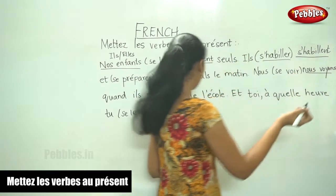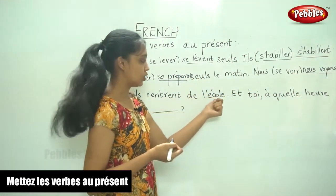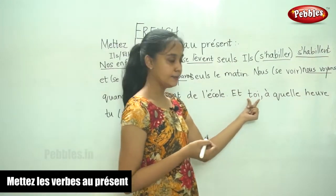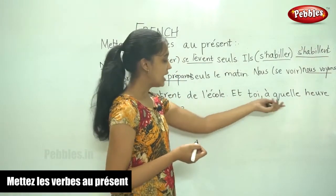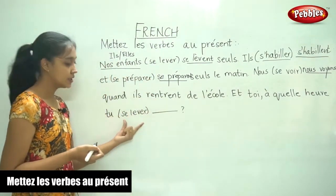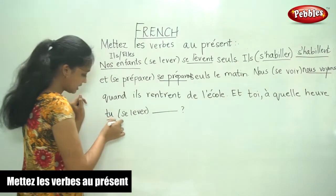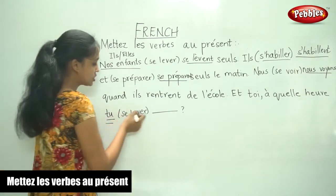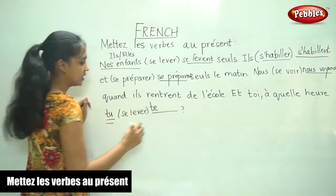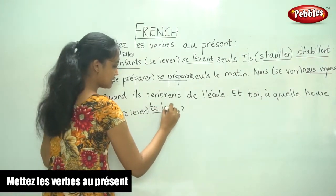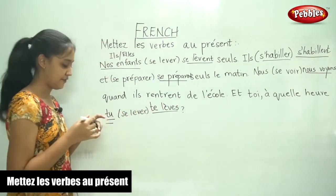Nous nous voyons quand ils rentrent de l'école. Et toi — so the sentence continues with et toi. À quelle heure, tu, and the verb given is se lever. The subject here is tu, so se becomes te. And since it is an ER verb, tu te lèves.